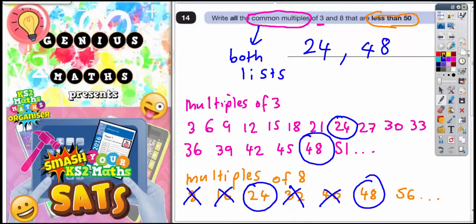Just to add a little bit of extra detail on there. 24 is a multiple of 3 because it's 8 times 3, and it's a multiple of 8 because it's 3 times 8. 48 is a multiple of 8 because it's 6 lots of 8. So that's why they are common multiples of 3 and 8 and they're both less than 50.